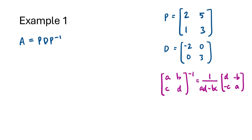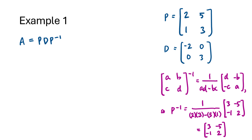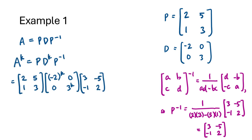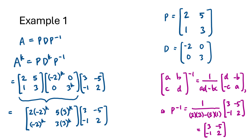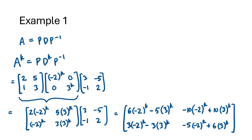Since A to the K equals P times D^K times P inverse, and D^K is just the diagonal entries of D raised to the K power, we now just need to multiply. We multiply the first two matrices together, then multiply the result by the third, to get an admittedly complicated-looking formula for A to the K. But imagine using this formula for K equals a thousand — we just plug a thousand in, which is very easy computationally, compared to multiplying matrix A by itself one thousand times. Even though it takes work to derive, this formula saves a lot of effort for large powers.